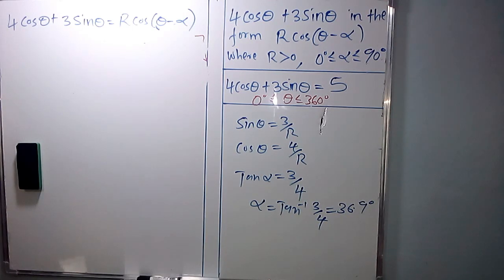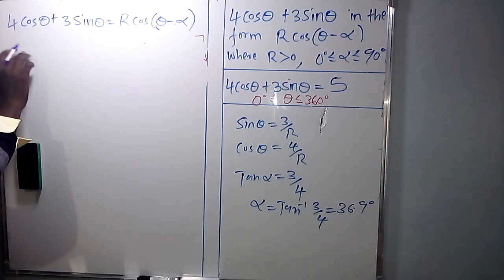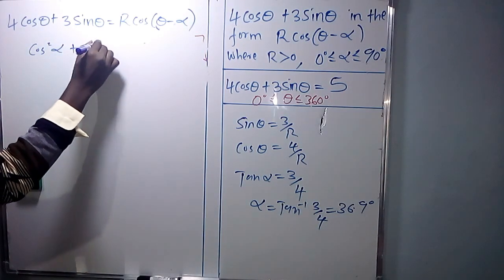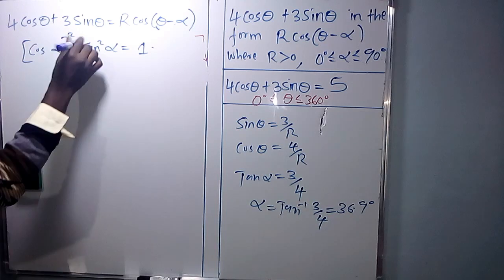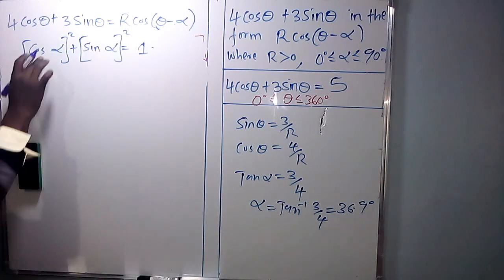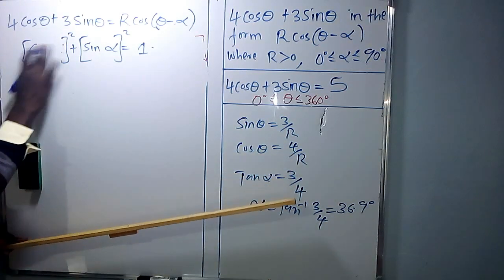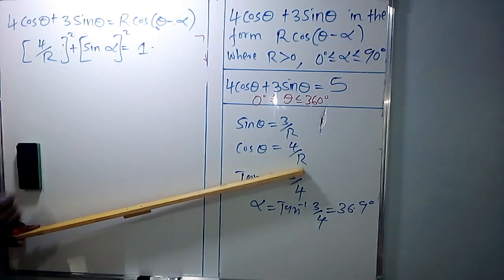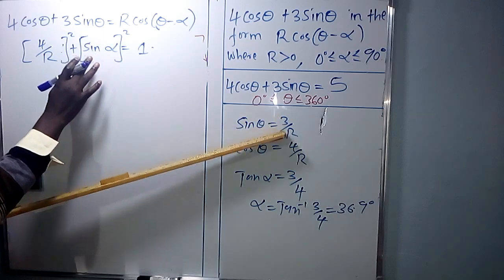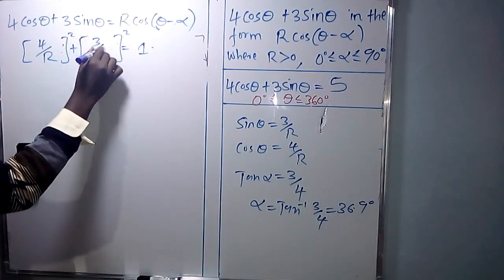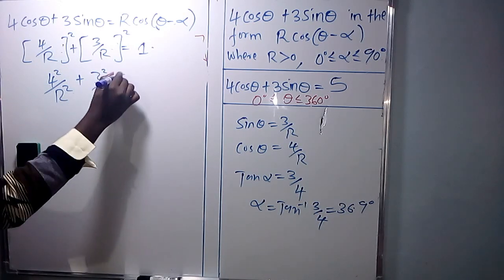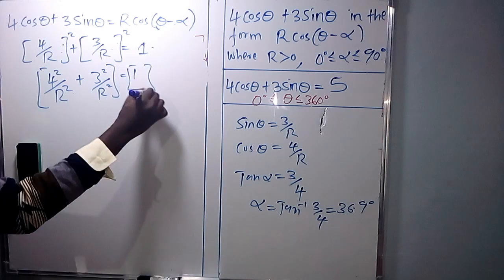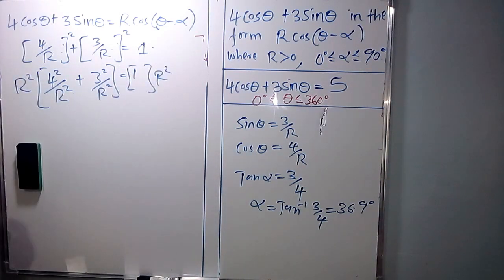Now having found alpha, we look for R using the Pythagorean identity: cos squared alpha plus sin squared alpha equals 1. Substituting cos alpha equals 4 over R and sin alpha equals 3 over R, we get 4 squared over R squared plus 3 squared over R squared equals 1. Multiplying both sides by R squared gives R squared equals 4 squared plus 3 squared.